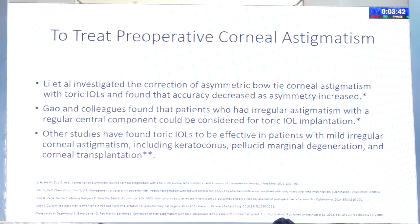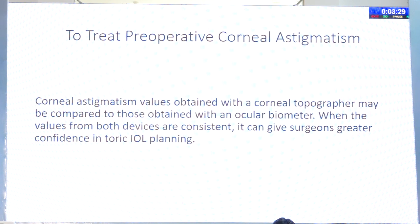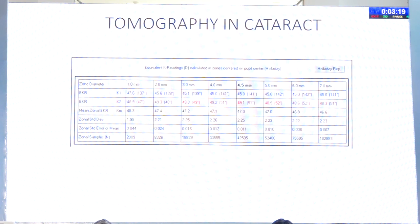To be more practical: if the corneal astigmatism value obtained with the corneal topographer and your biometer are the same, then you are probably good to go ahead with toric IOL planning. The next aspect of topography is that it gives an EKR value, which is Holladay's calculation. This gives a value at every zone of the pupil — 3, 4, 4.5 mm — and it is good to go with the 4.5 mm pupil zone.